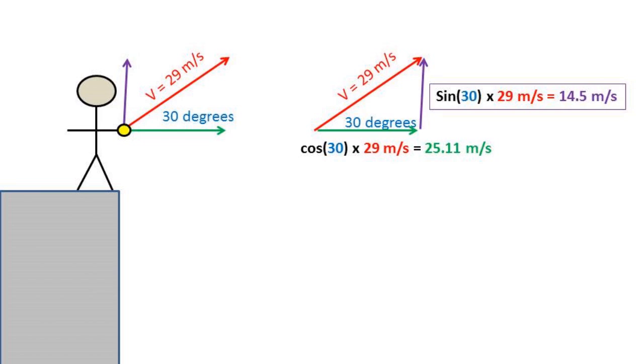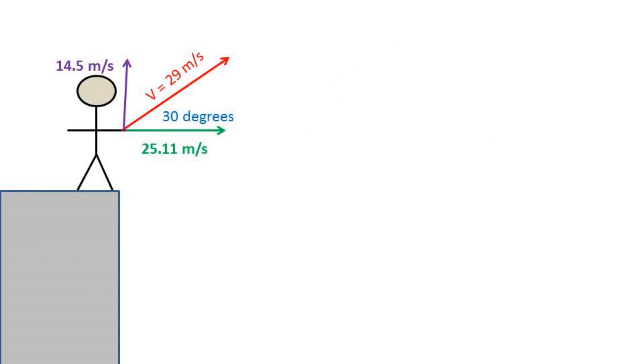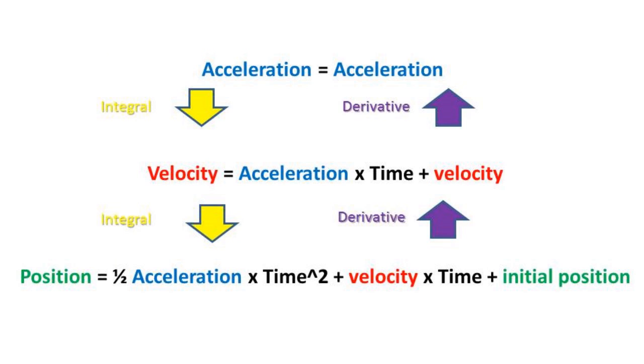Basically what we did there was solve the right triangle. If it is unclear how we did this, review SOHCAHTOA. So now that we've broken down the velocity into x and y components, we can find the max height. When solving a projectile motion problem, we use three basic formulas.